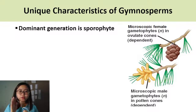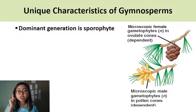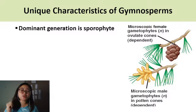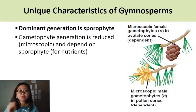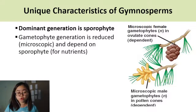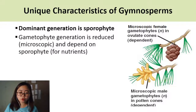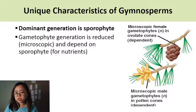Let's have a look at the diagram of the pine tree. The first unique characteristic is that the dominant generation is sporophyte. What you can see in the pine tree is the sporophyte generation. The gametophyte generation is reduced — that means it's microscopic in size and depends on the sporophyte for nutrients. It is the pollen found in the male pine cones and the egg cells (ovules) found inside the female cones — that is the gametophyte generation.